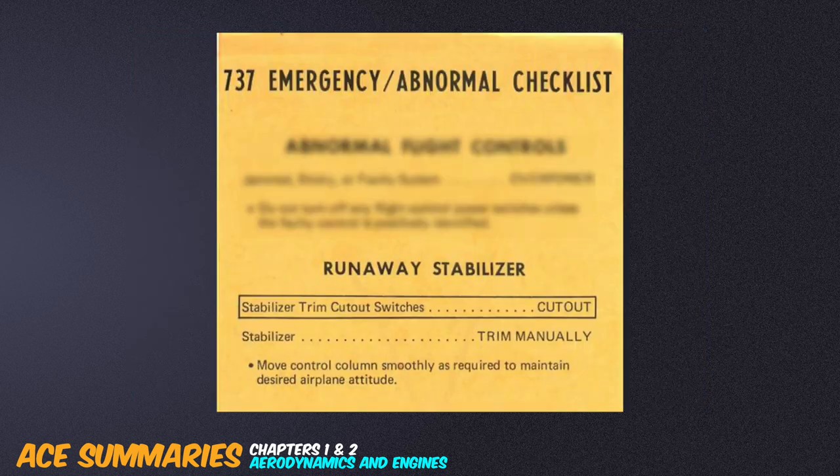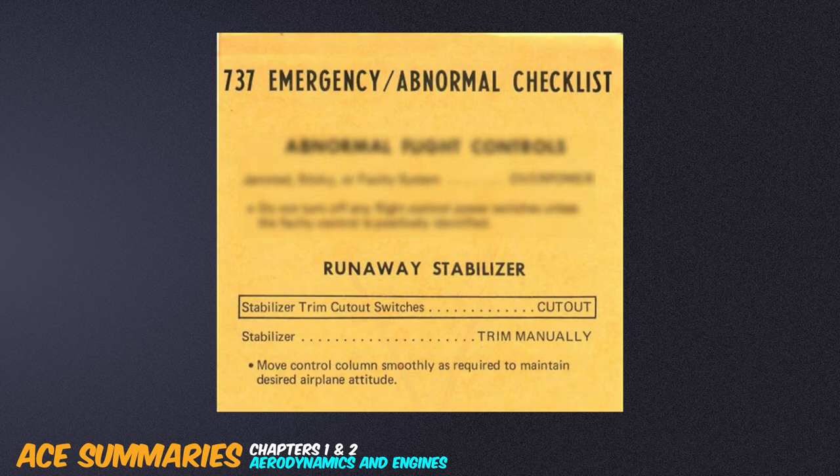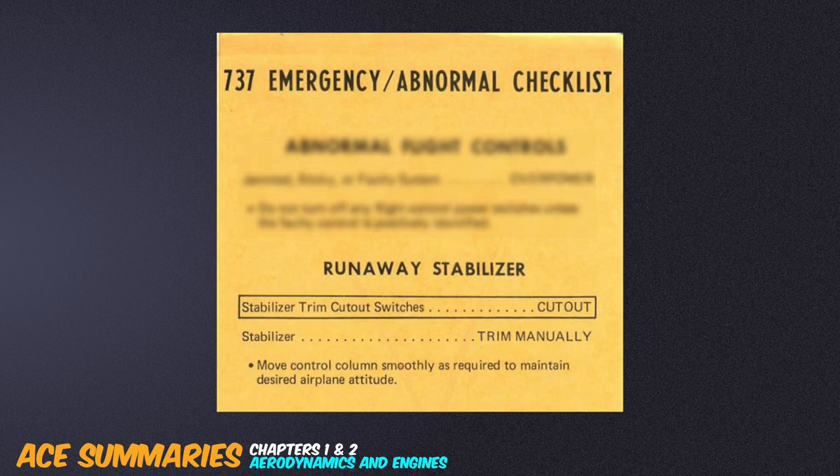A runaway stabilizer will max out at its top or bottom stop. If this happens, the control column must be gripped firmly, autopilot disengaged, trim switches to the cutout position and manual grasp on the trim wheel. Manual trim is to be used for the remainder of the flight.